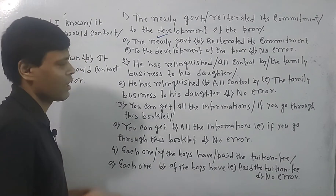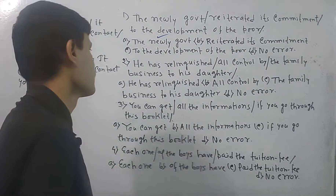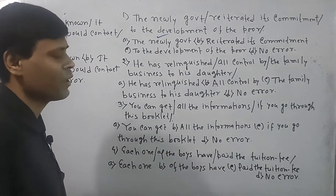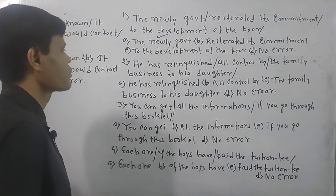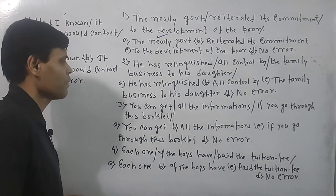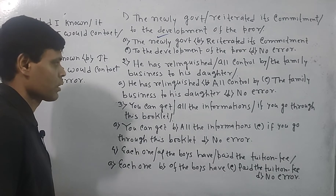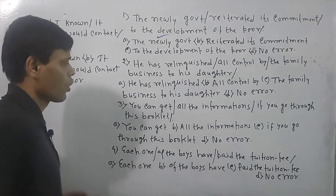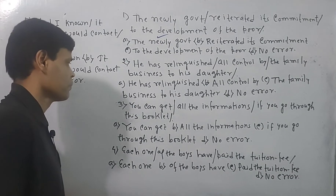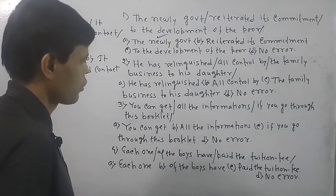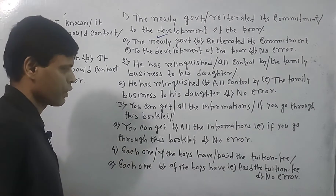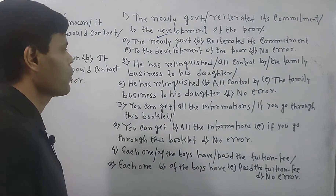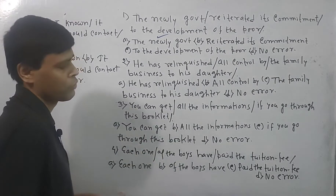Now let's look at the next question: 'He has relinquished — relinquished means given up — all control by the family business to his daughter.' The four options are: 'he has relinquished,' 'all control,' 'the family business,' 'to his daughter,' or 'no error.' If you think there is no error, then you go for the option 'no error.'